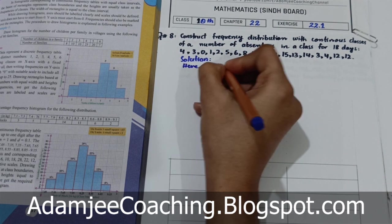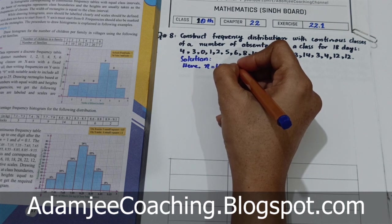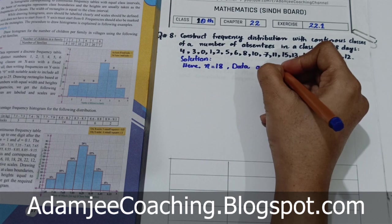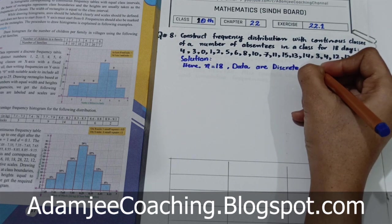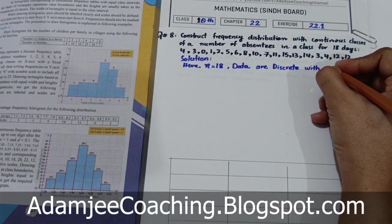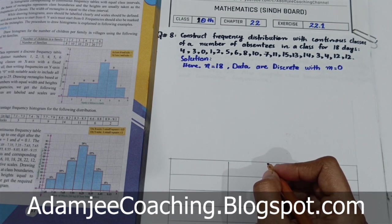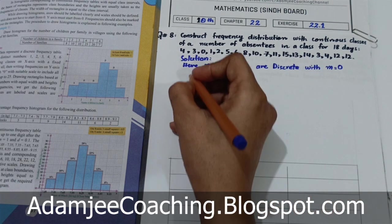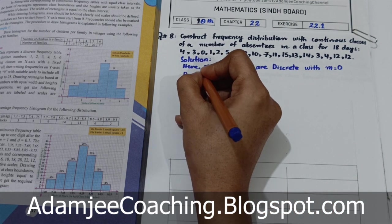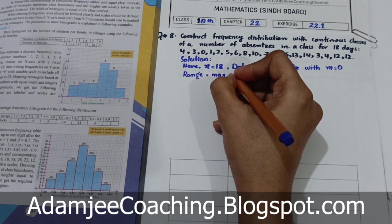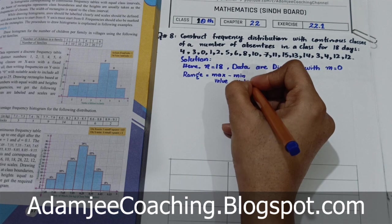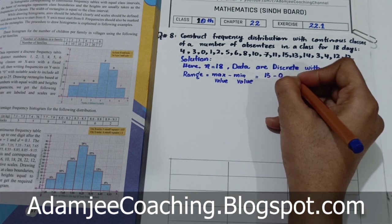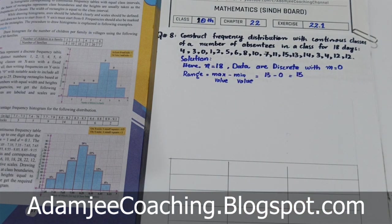Here, n is equal to 18 and data are discrete. Koi bhi decimal maujood nahi hai, toh m zero hoga. Ab range find out karte hain: range = maximum value minus minimum value. Maximum aapke paas 15 hai aur minimum 0. Toh range aa gayi 15.